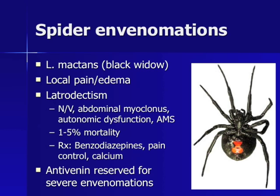We will now briefly discuss spider bites. The Latrodectus mactans spider, or black widow, is named for the female's propensity to kill and eat the male after mating. Bites from the black widow cause local pain and edema. In rare cases, a systemic reaction known as latrodectism occurs, signaled by constitutional symptoms and abdominal myoclonus yielding pseudoperitoneal findings on physical examination. Benzodiazepines are the drug of choice in treating latrodectism. Antivenin for black widow bites is reserved for severe cases and should only be pursued in consultation with a toxicologist.